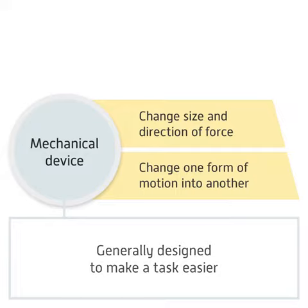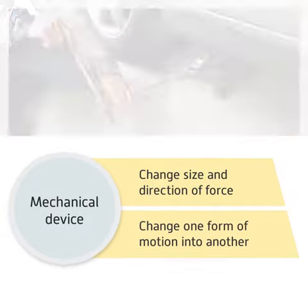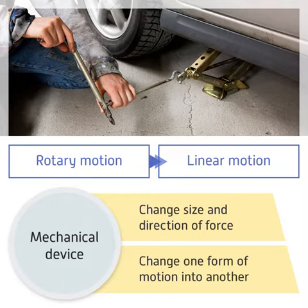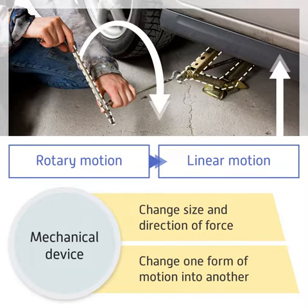A car jack is an example of a device that transforms rotary motion into linear motion. In this case a handle is turned in a rotary motion, causing the jack to move in a linear way, lifting the car up vertically.